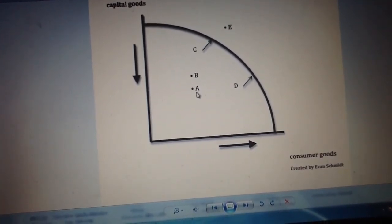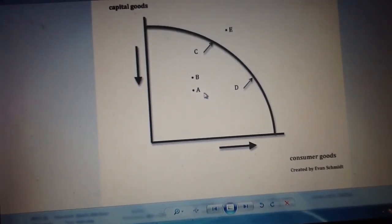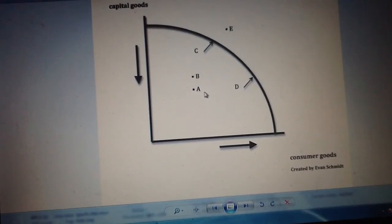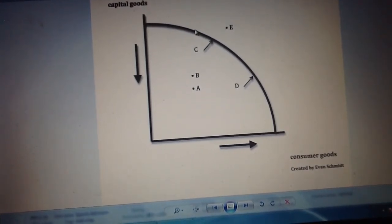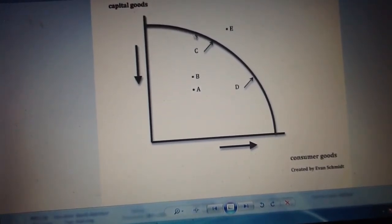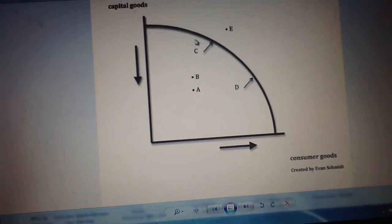So they're inefficient and not producing to their maximum ability. Inefficiency is probably caused by unemployment or other things where the economy isn't functioning to its total capacity. If it's a point on this line—the boundary, as it's often called—then you have 100% efficiency in your economy.